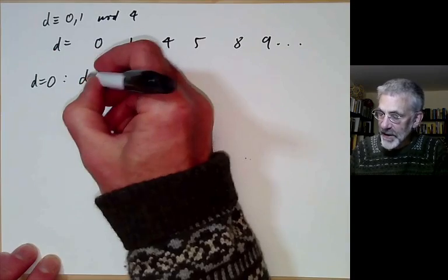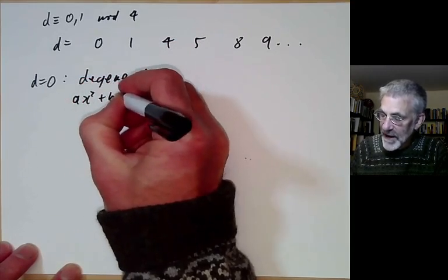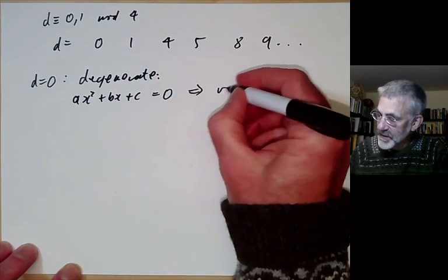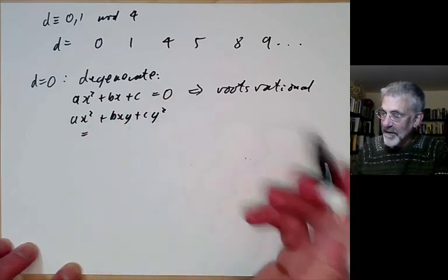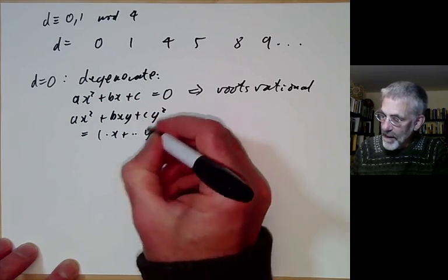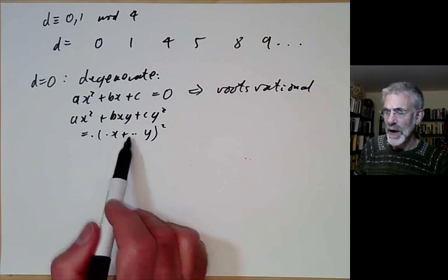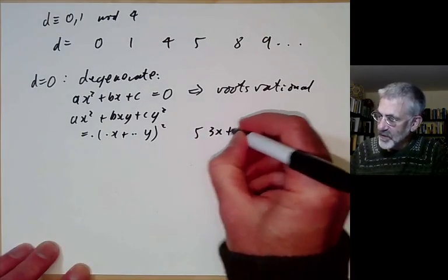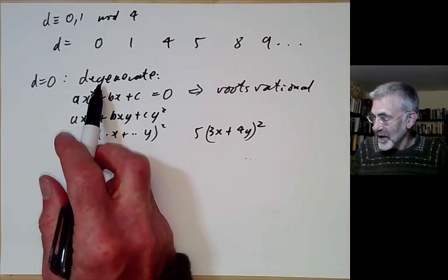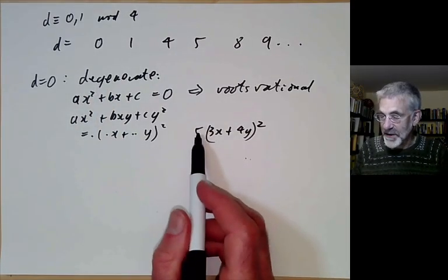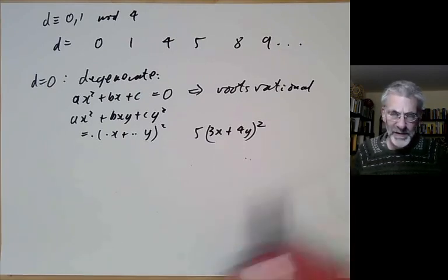First, d = 0 is kind of degenerate. If d = 0, then looking at ax² + bx + c = 0 means both roots are rational. And ax² + bxy + cy² factors as some constant times (px + qy)² for rational p and q. So the form essentially becomes just the square of something linear in x and y. For instance, 5(3x + 4y)² has discriminant zero. So there are an infinite number of forms of discriminant zero — you can just vary the constant — but they're not very interesting. You're just asking whether some constant times a square equals some number n, so everything is easy to do.